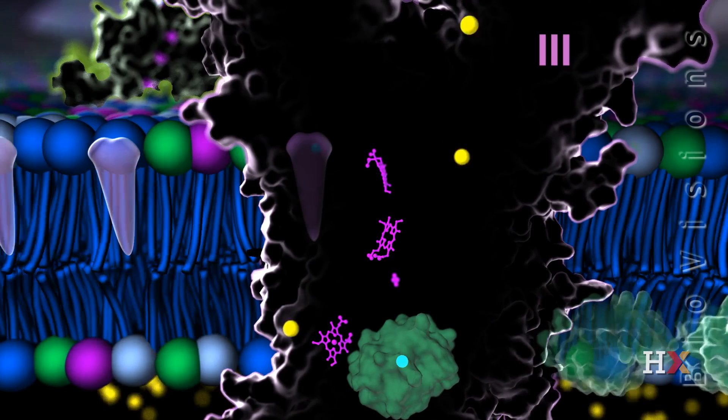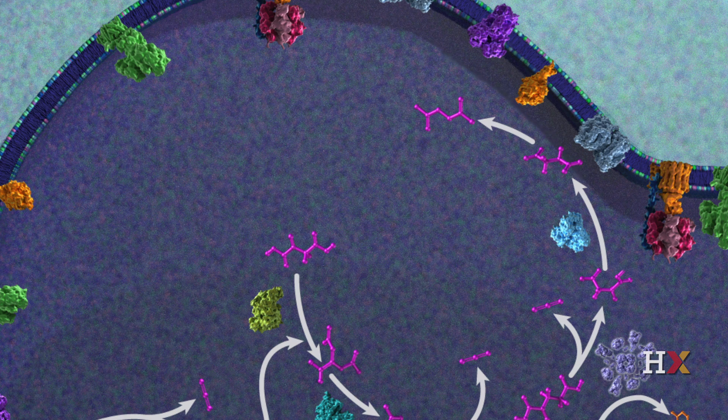Another interesting aspect of complex II is that it uses FAD rather than NAD plus to accept electrons.